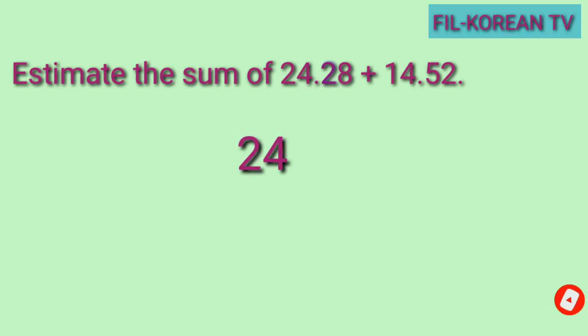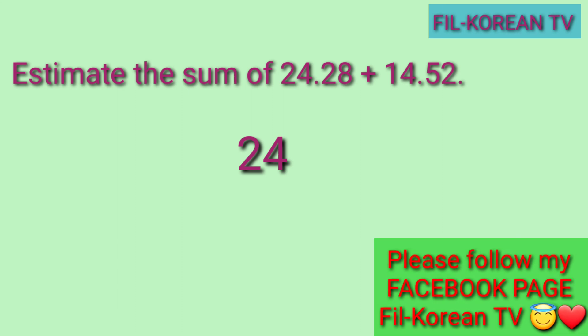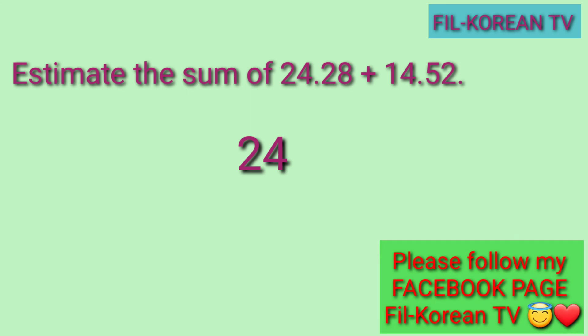Dito naman tayo sa pangalawang addend, yung 14 and 52 hundredths. Yung whole number ay 14, at ang nasa 1's place ay 4 — ito yung rounding place. Ngayon, ang susunod sa kanya na number sa kanyang kanan ay 5. At dahil 5 ito, magra-round up tayo. Dadagdagan natin ng 1 itong 4. Kaya yung 14 ay magiging 15.